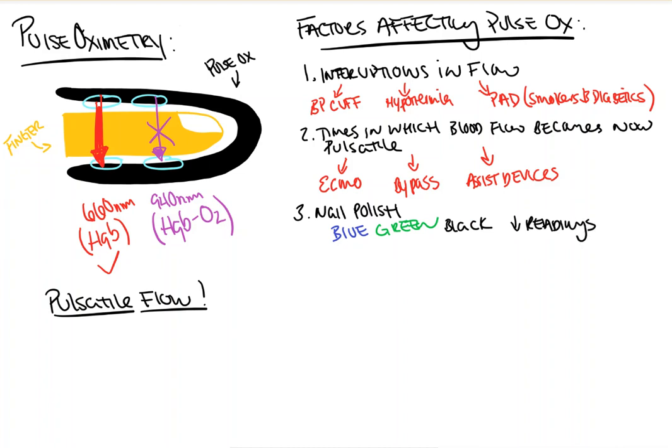Now, this was supposed to be a function of disruption of light absorption at the detector portion of the pulse ox because the thought was that these colors may absorb some of the light going through.